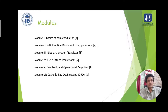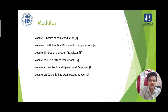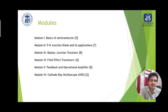This course comprises six modules. Module one on basic semiconductors has five contact hours. Module two on PN junction diode and its applications has seven contact hours. Module three on bipolar junction transistor has eight contact hours. Module four on field effect transistor has six contact hours. Module five on feedback and operational amplifiers has eight contact hours, and module six on cathode ray oscilloscope has two contact hours.